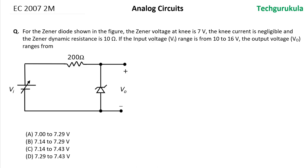This question came in 2007 for EC, two marks. For the Zener diode shown in the figure, the Zener voltage at knee is 7 volts, which means this is the starting of the breakdown region. The knee current is negligible and the Zener dynamic resistance is 10 ohms.